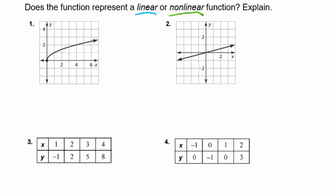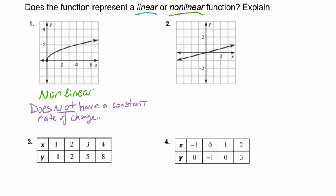For number 1, we see our function starts at 0 and as it goes up, we see a curve in it. So this is going to tell us that this is non-linear. Because it has a curve, that tells us there is not a constant rate of change, thus making it non-linear with a curve shape.